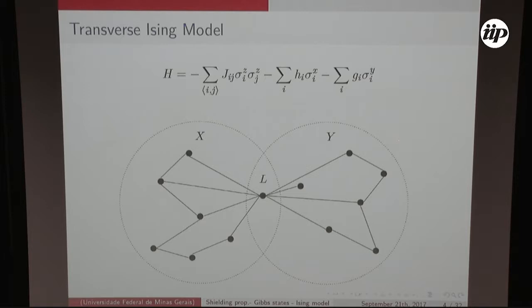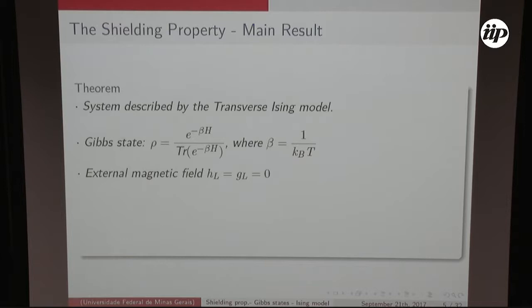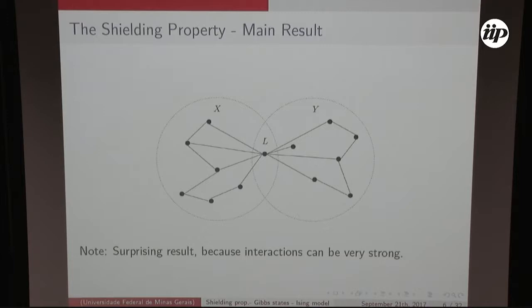What is the shield property? For systems described by the transverse Ising model in the Gibbs state given by this formula, where beta is the inverse temperature, with an external magnetic field nu applied at the middle intersection site but no magnetic field there, we have shown that the reduced state of one side has no dependence on the parameters of the other side. It is surprising because you could have a really strong interaction and this reduced state cannot detect it.